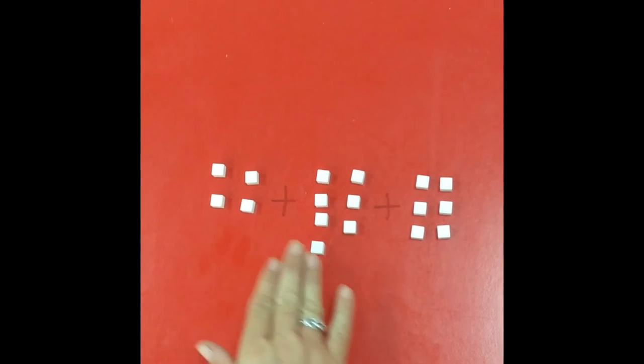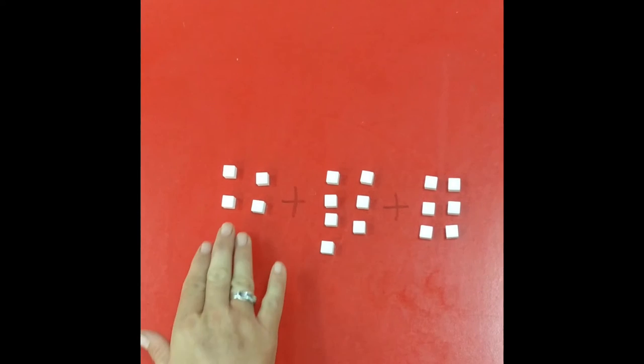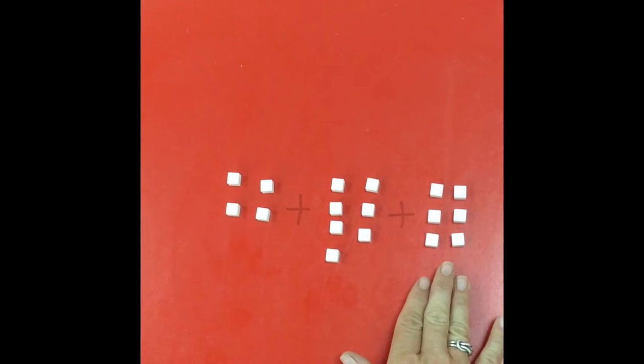However, now we'll be moving on to adding three digits together, three single digits. So in this case we've got four, add seven, add six.